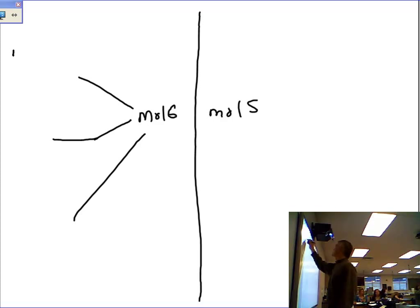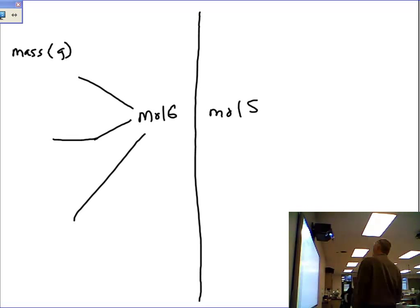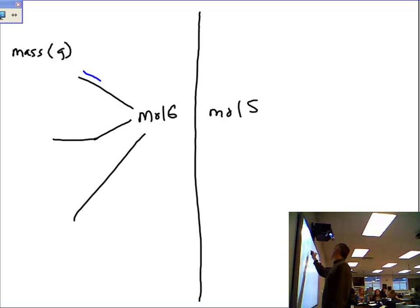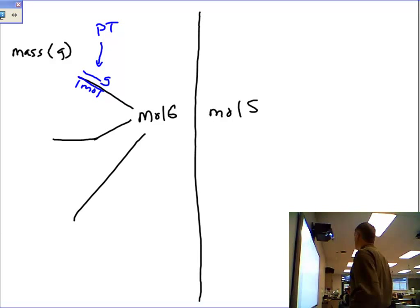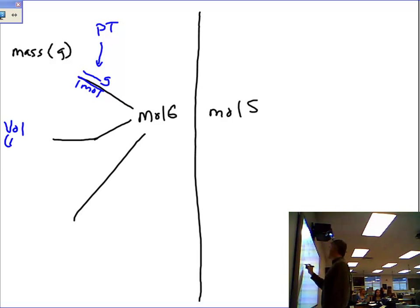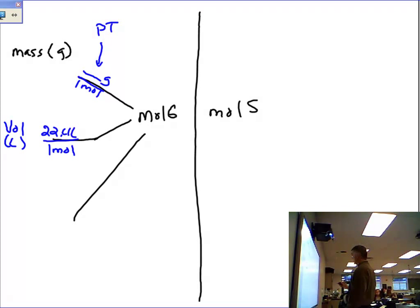The first one is mass, which is in grams. When you're doing a conversion from grams to moles, what do you use? Grams to moles, which is the molar mass. So you can say so many grams in one mole. And you get this number from the periodic table. If I want to go to volume, which is liters, you're going to say 22.4 liters in one mole.